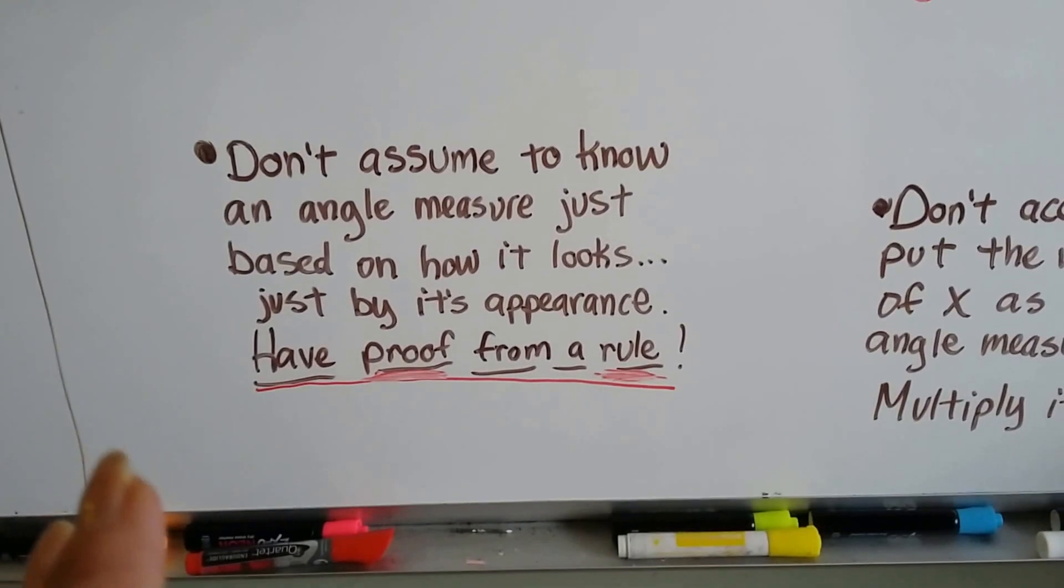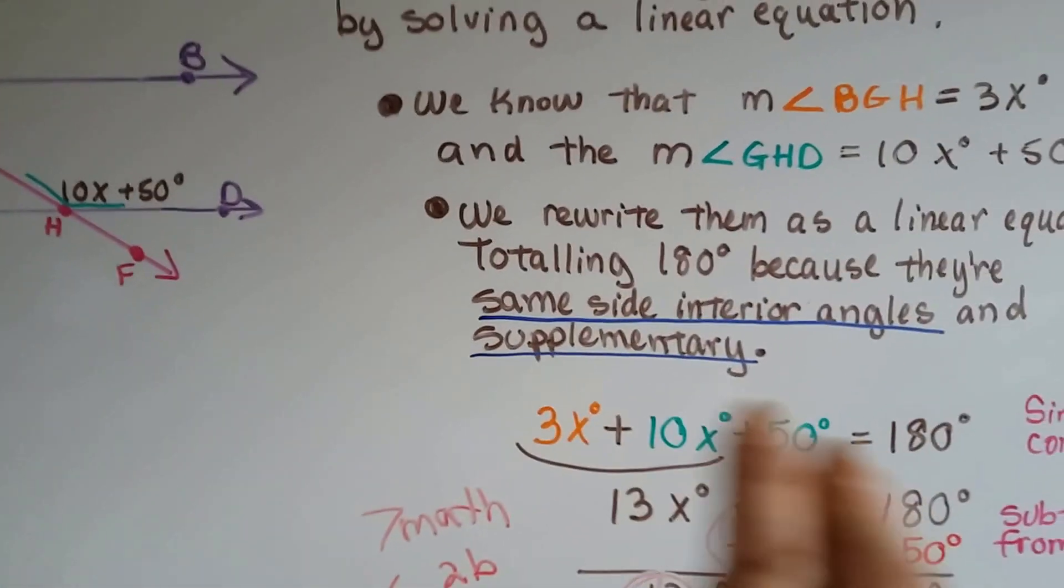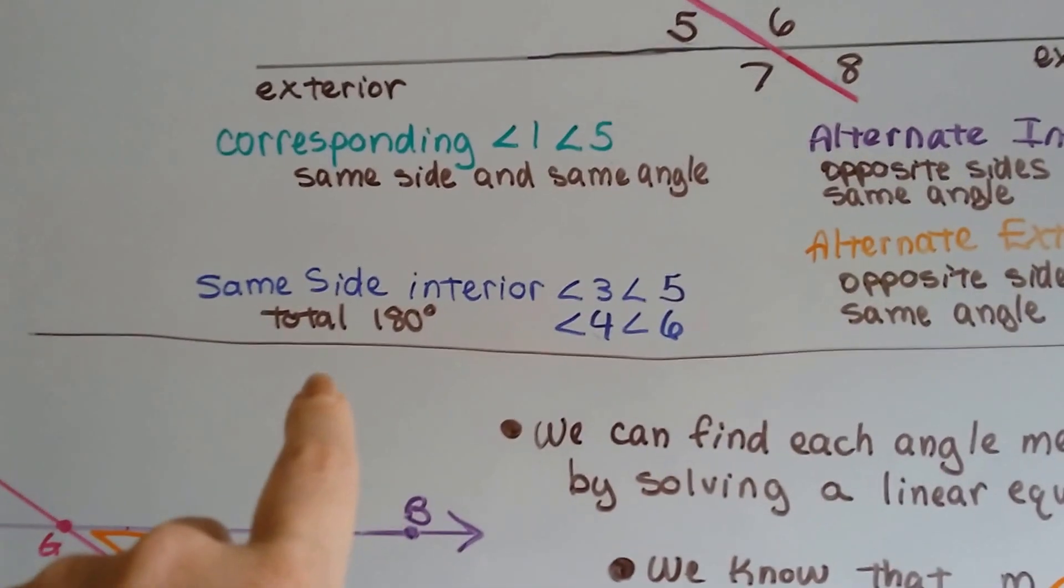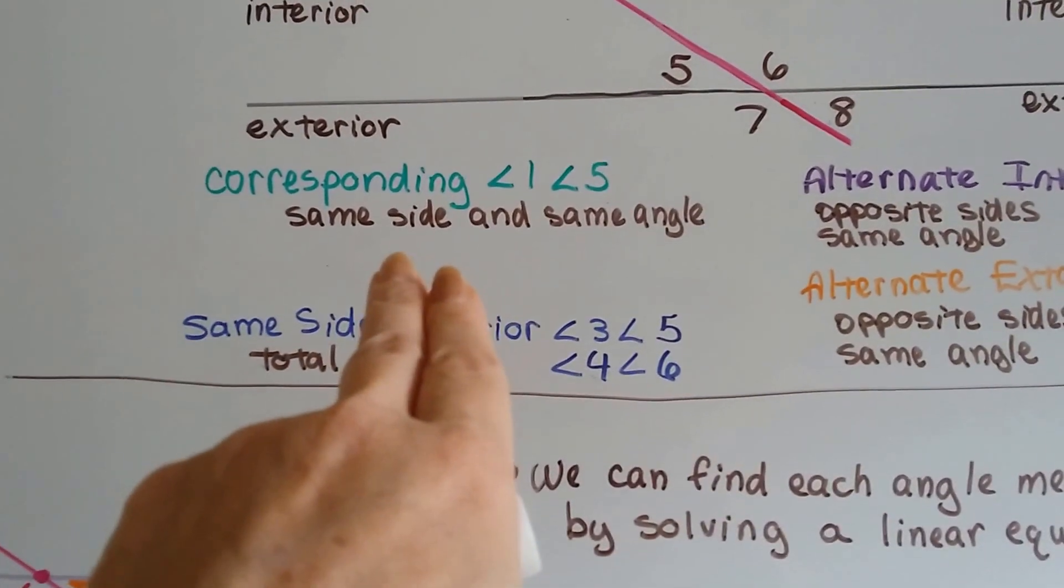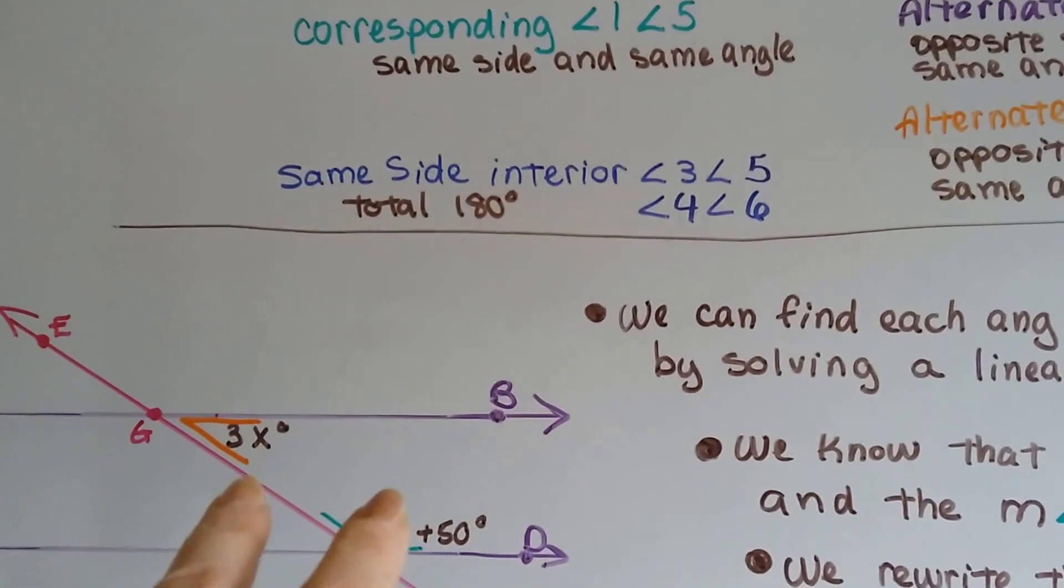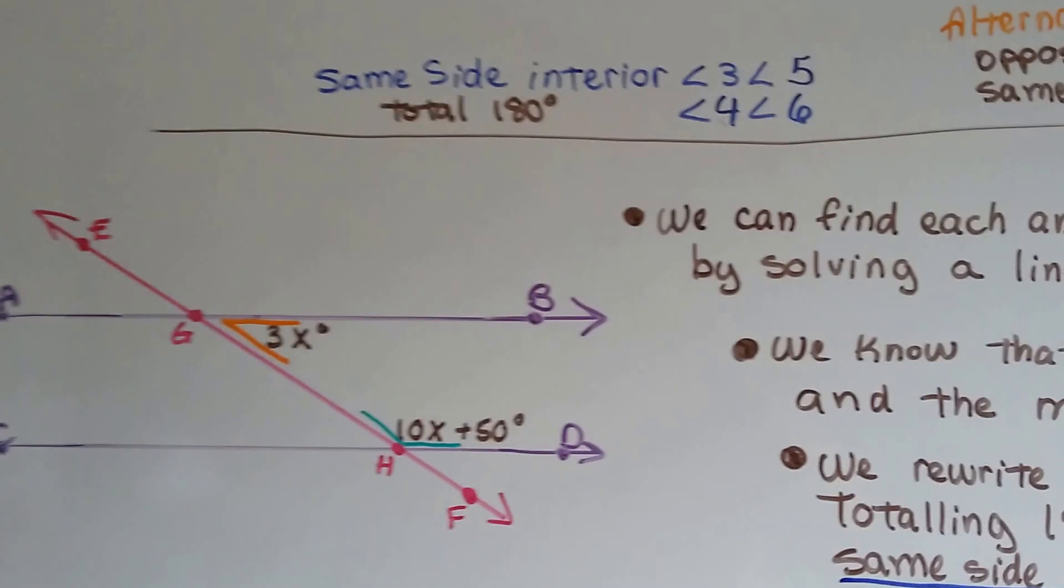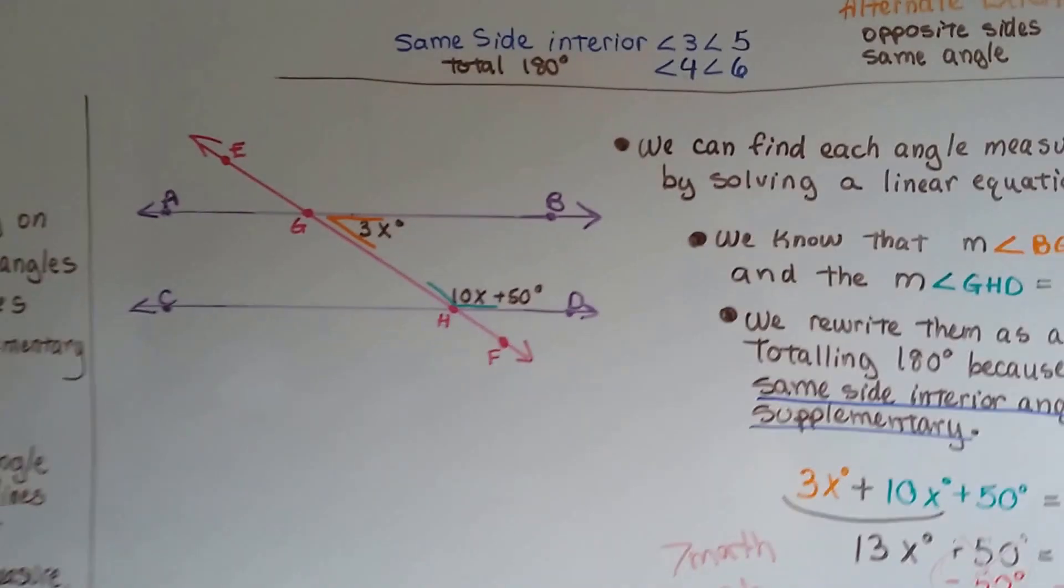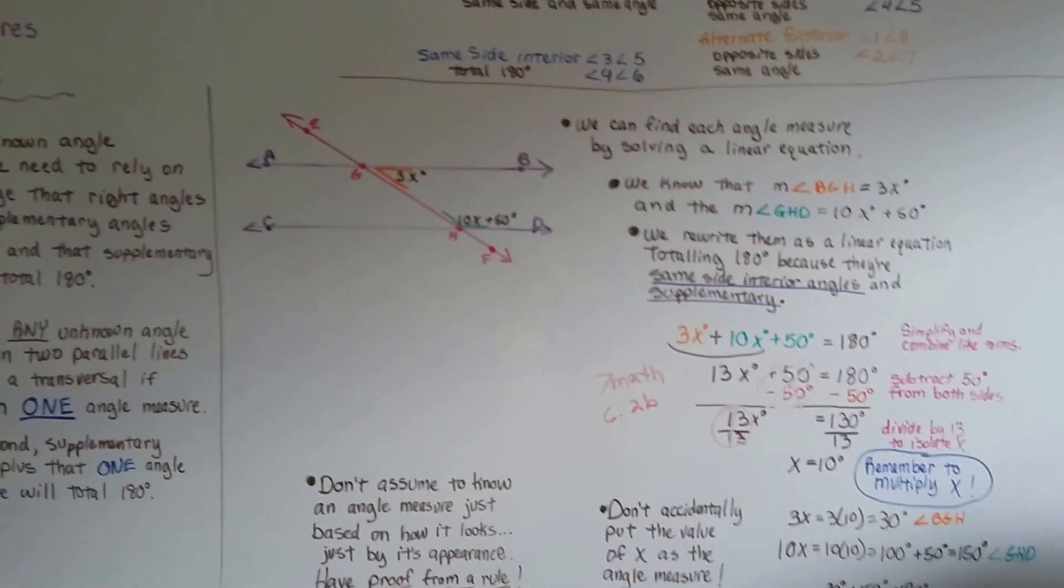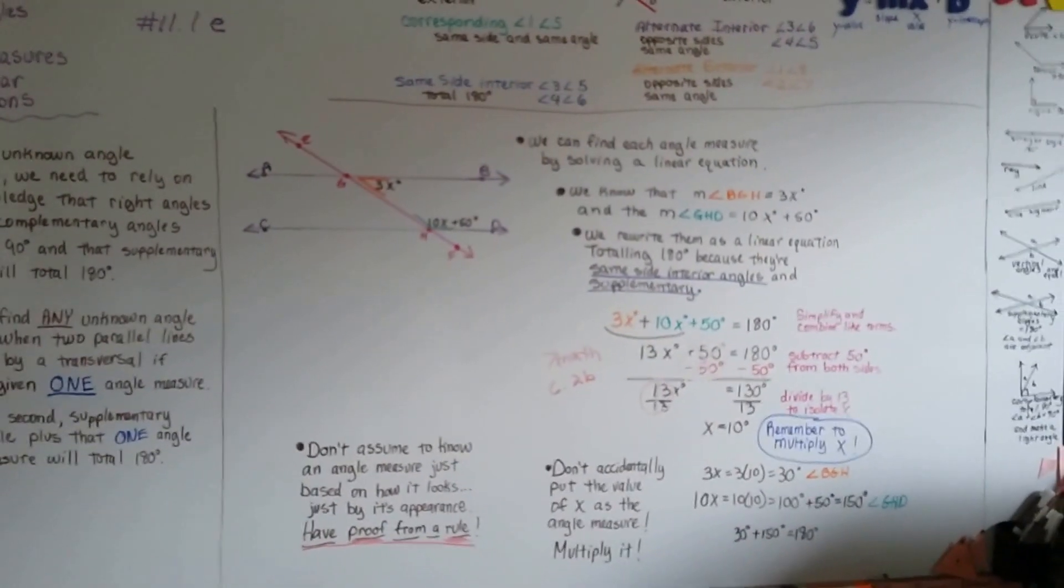You have to have a proof from a rule, like supplementary angles equal 180 degrees, or same side interior angles total 180, or that corresponding angles will be congruent. So if the angles are corresponding, they're congruent, that would be proof. And in geometry, it's very important to be able to prove what you're doing. And they're called proofs.